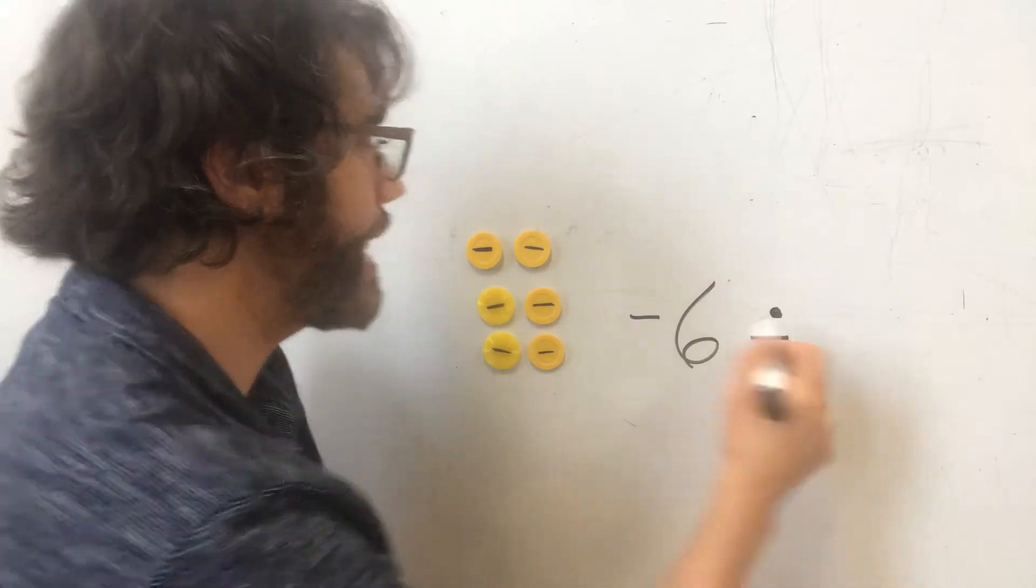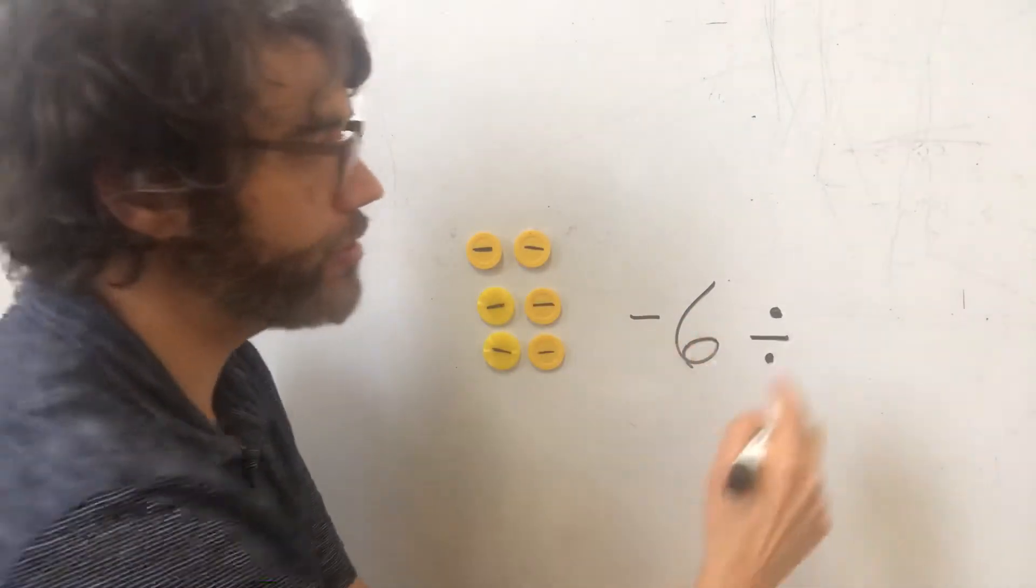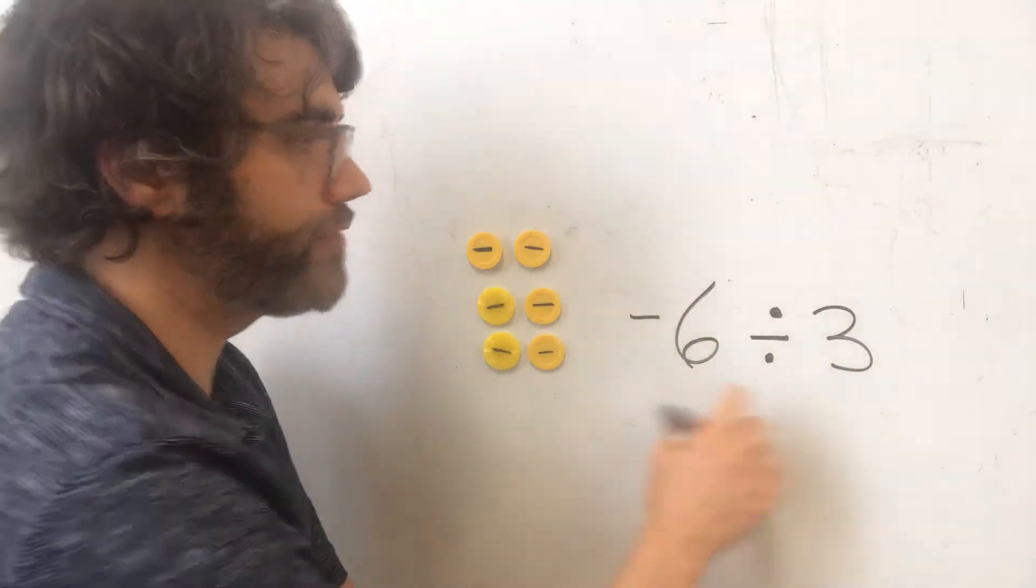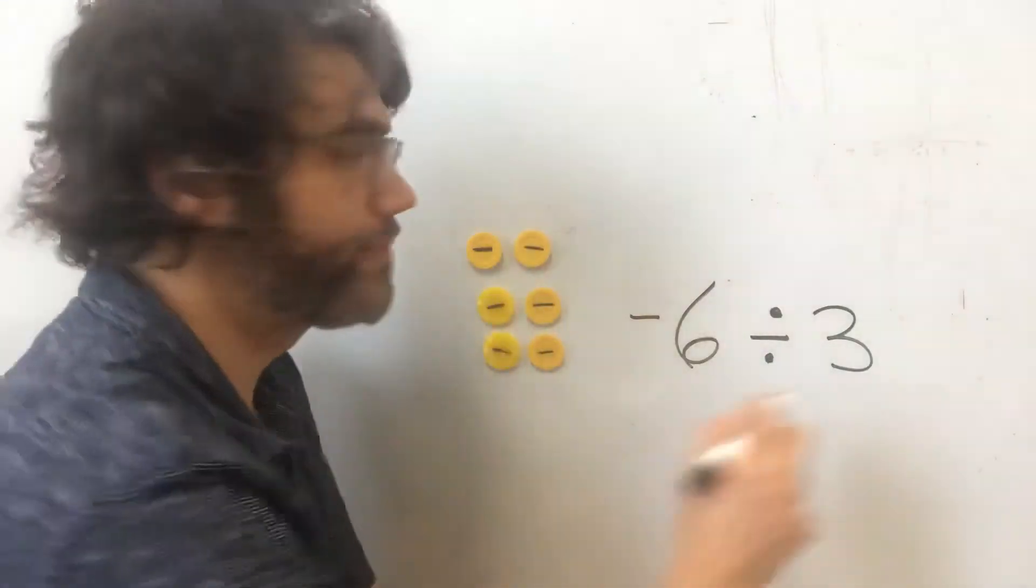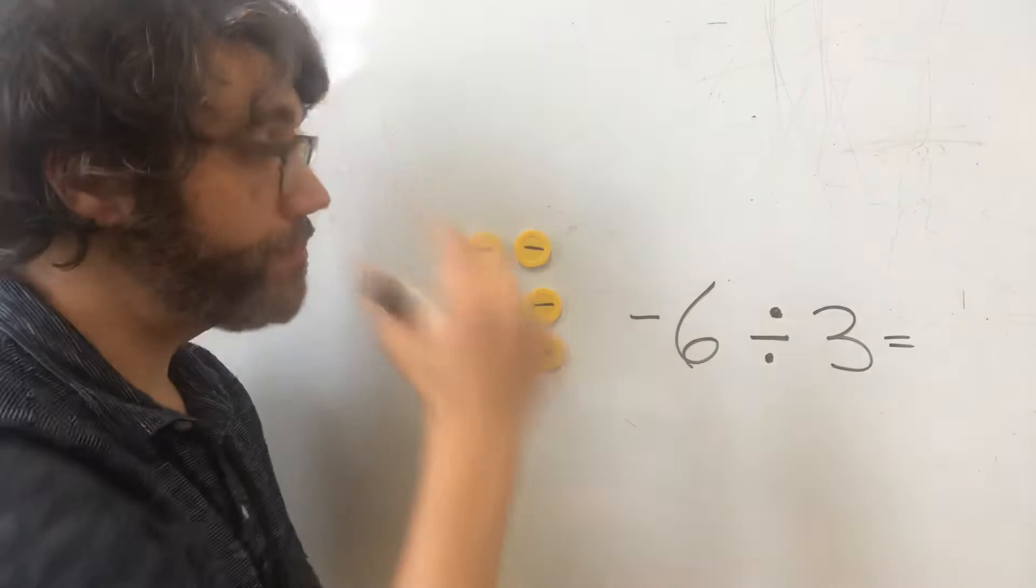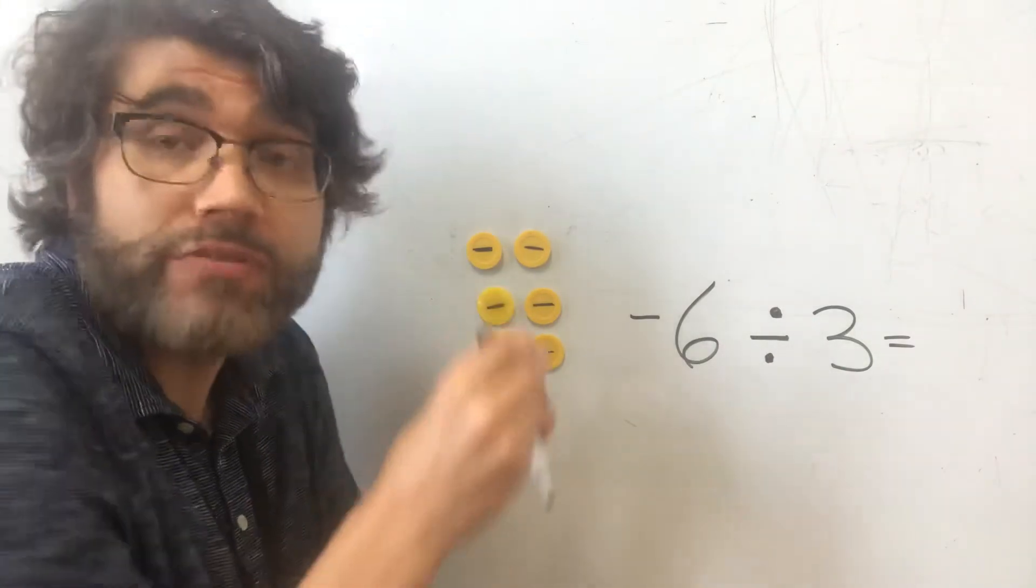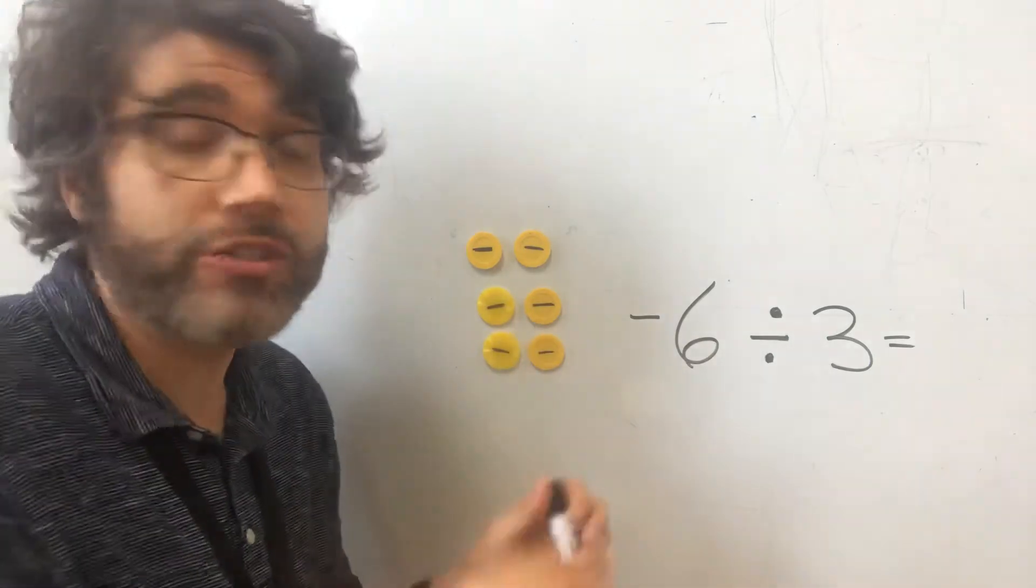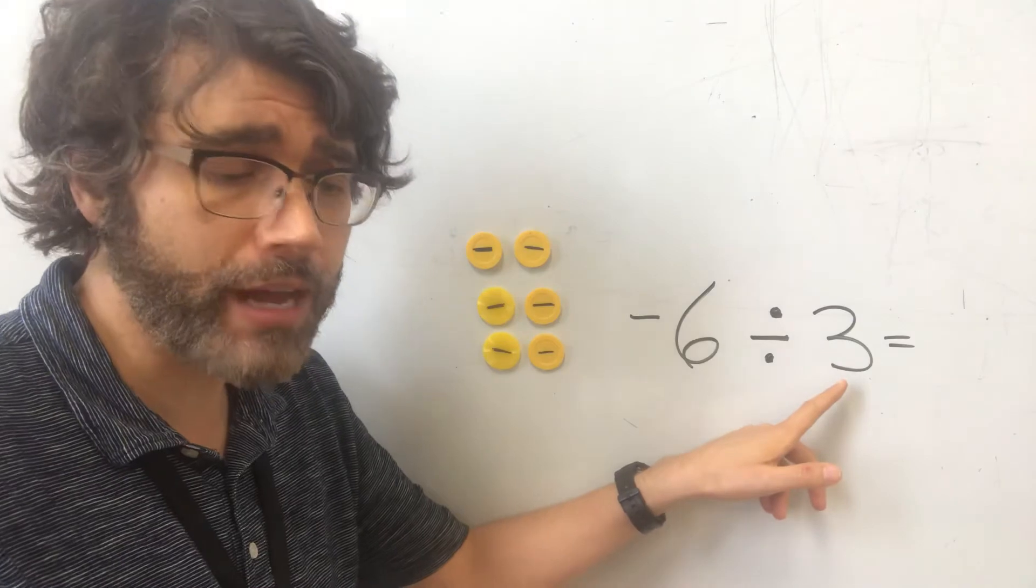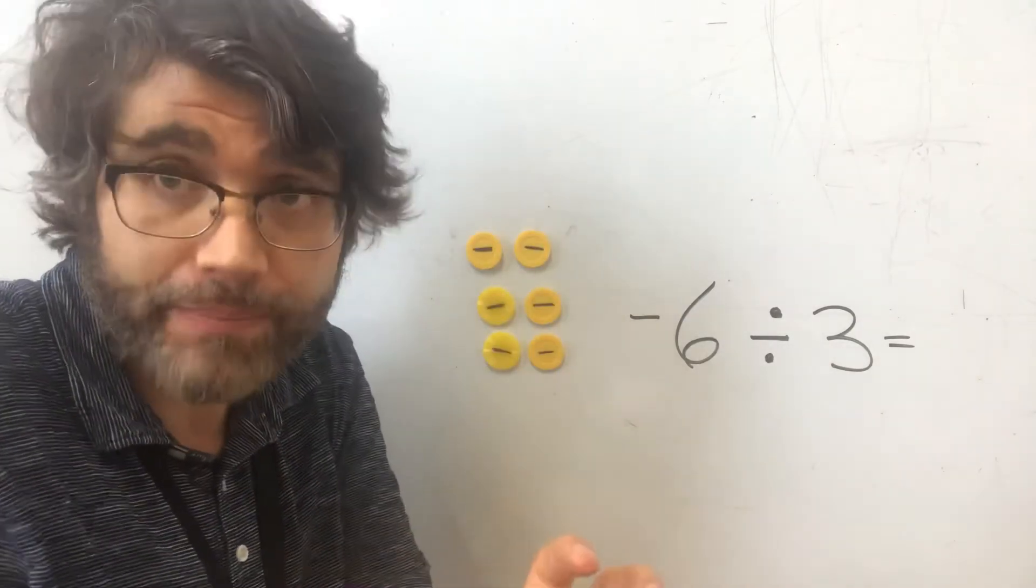Okay? And let's say that we divided it. Let's say we divided our $6 of debt into three groups. Okay? So this is the number of groups. This is our total number of dollars. And we want to find out how much debt is in each of these three groups. And, of course, when we divide, we're going to be dividing by groups that have equal quantities in them.